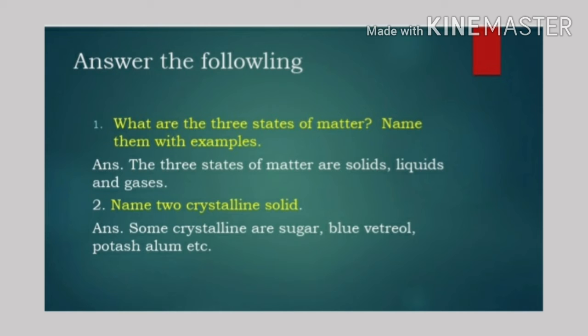Answer: The three states of matter are solids, liquids and gases. Question two: Name two crystalline solids. Answer: Some crystalline solids are sugar, blue vitriol, potash alum, etc.